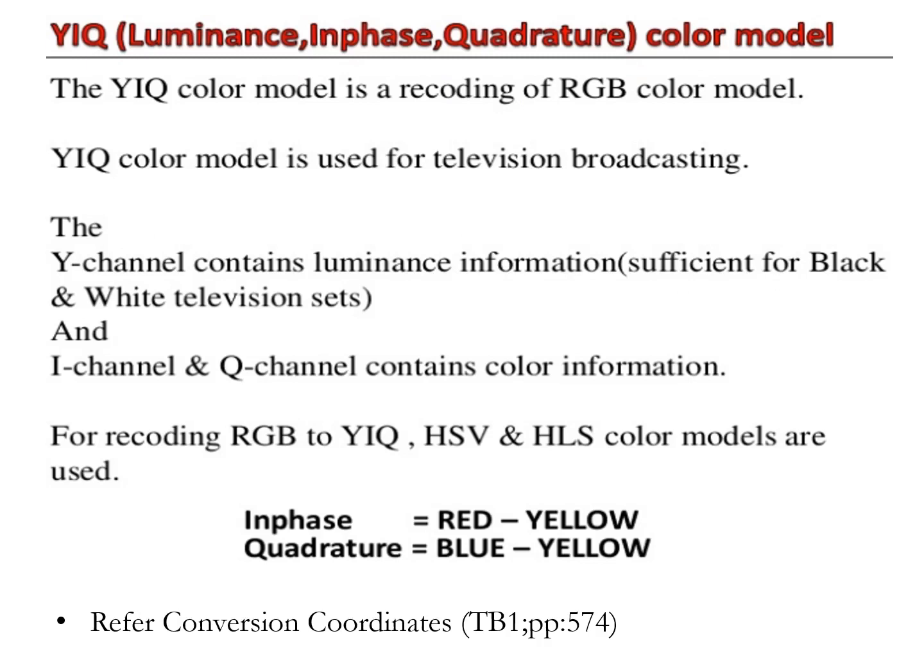The YIQ color model is a recoding of the RGB color model and is used for television broadcasting. The Y channel contains luminance information sufficient for black and white television sets, while the I channel and Q channel contain color information — in phase and quadrature respectively. In phase is produced by subtracting red with yellow, and quadrature by subtracting blue with yellow. This model was designed to separate chrominance from luminance.